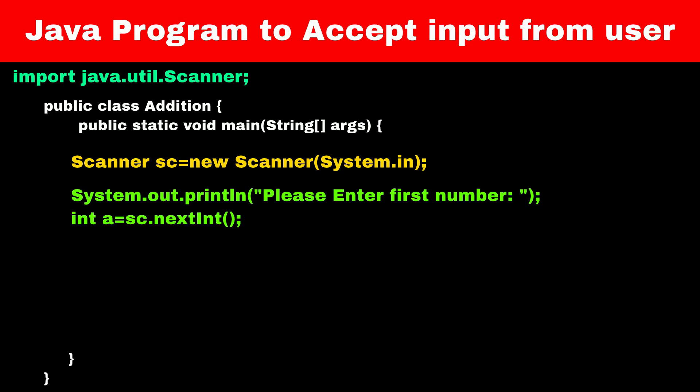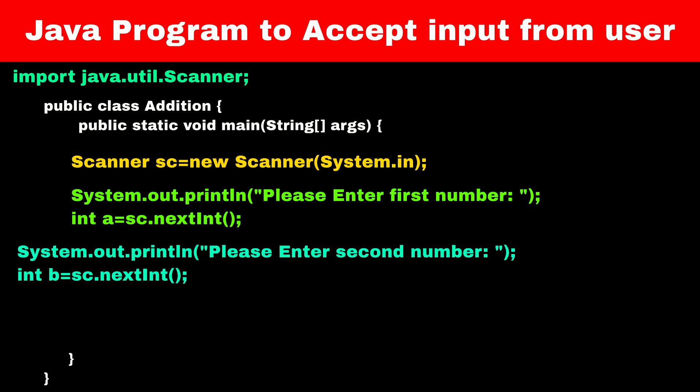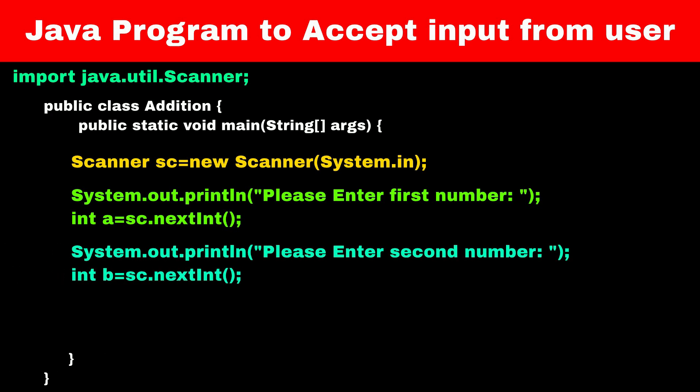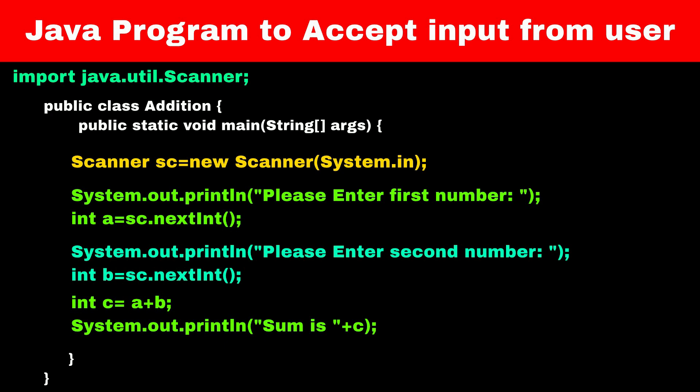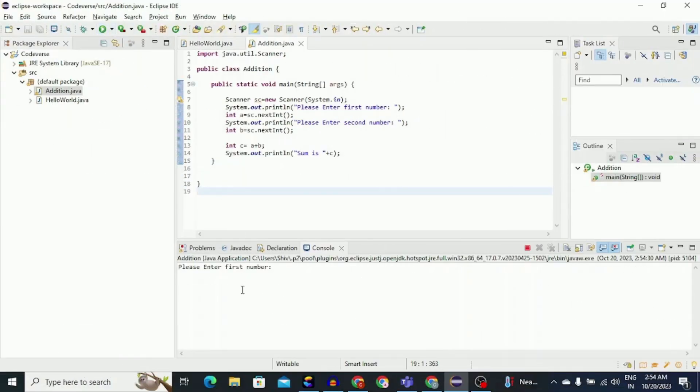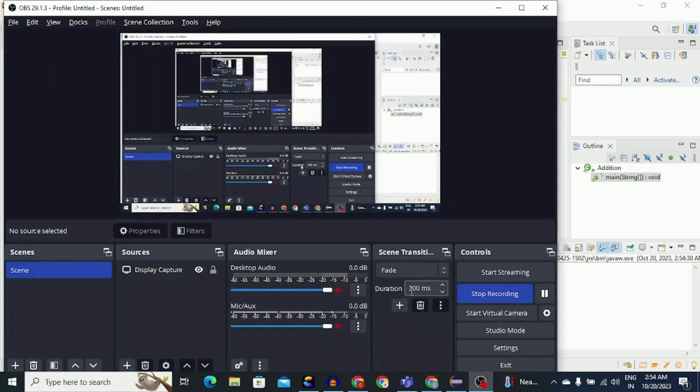Let's save this value in a variable called a. Now let's take one more value from the user and save it in another integer variable called b. To perform addition, we can use the plus operator and save the result in a variable called c. Now let's display the sum using a print statement. Your Java program for adding two numbers is ready. If you run this program in Eclipse, it will first ask for the first number, then the second, and then display their addition. That's it for today's video — see you in the next one.